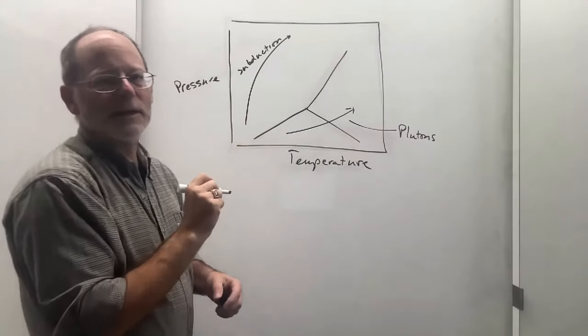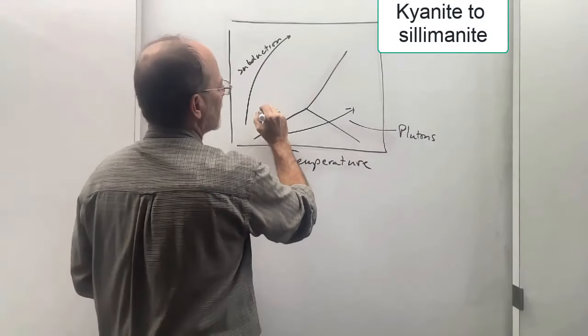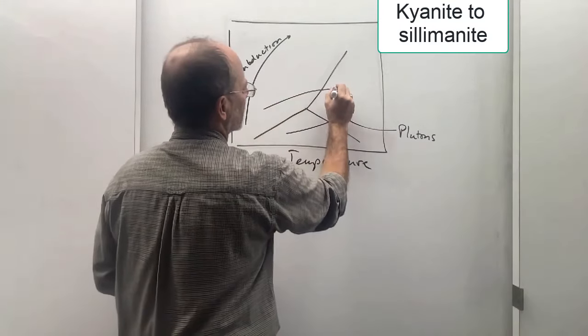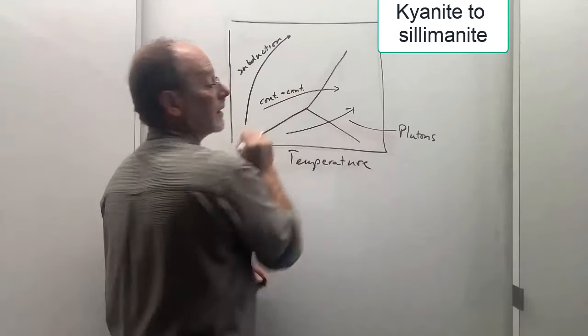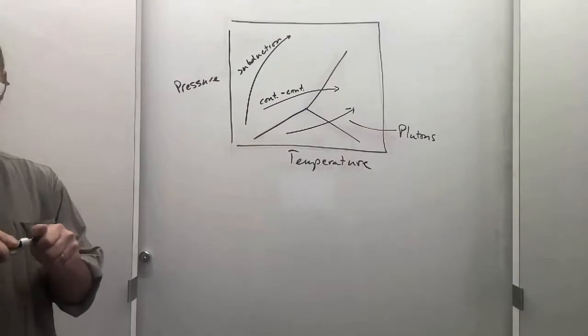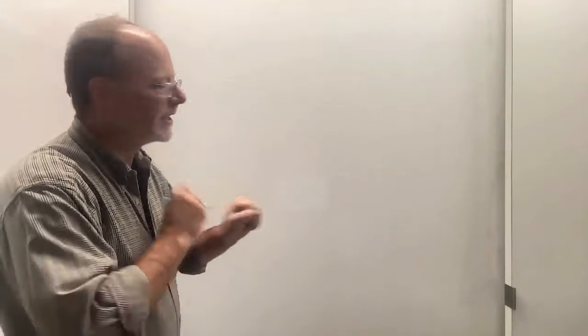And in continent-continent collisions, we typically see kyanite to sillimanite. Let's deconstruct this a little bit.